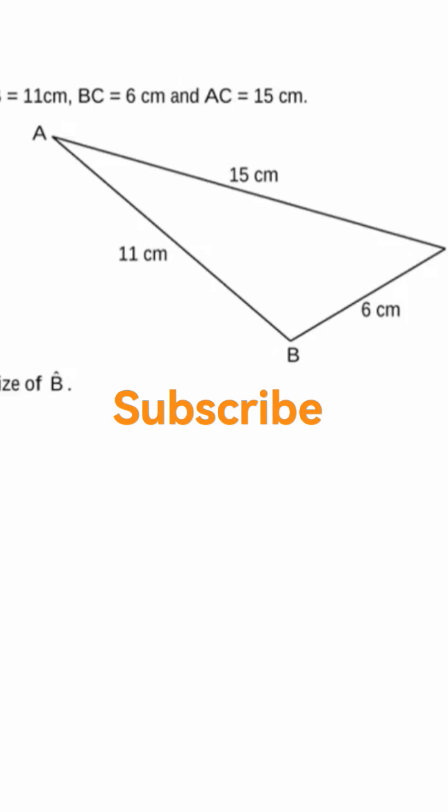So we know that the first rule, we can use the sine rule or the cosine rule or the area rule. For us to use the sine rule, we must have at least one angle and two sides. Or we can have two angles and one side. Here, we don't have any angle.